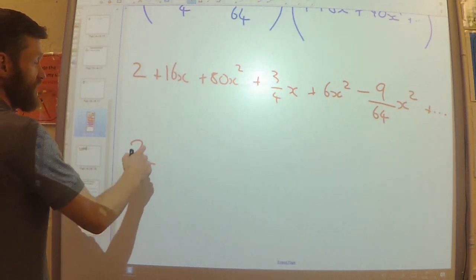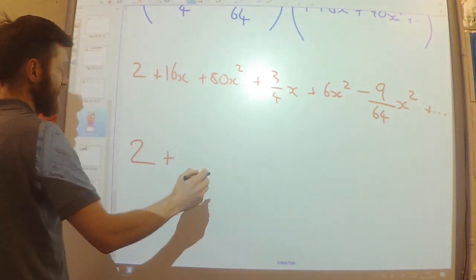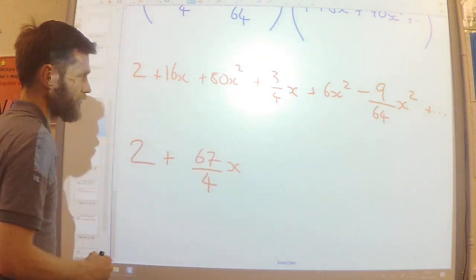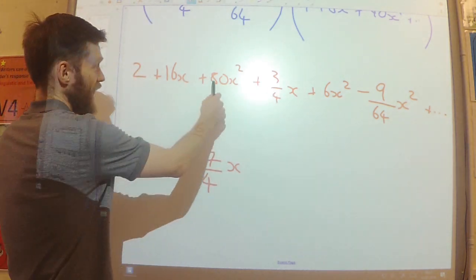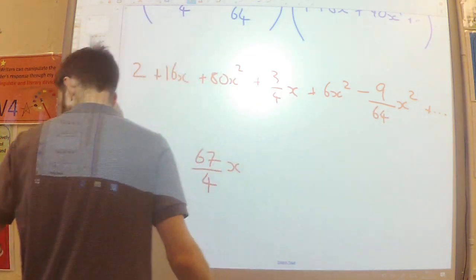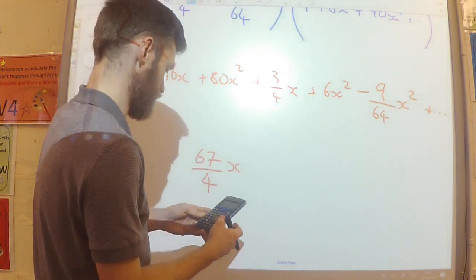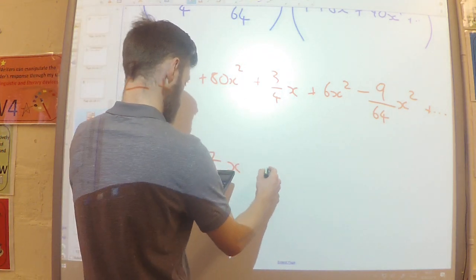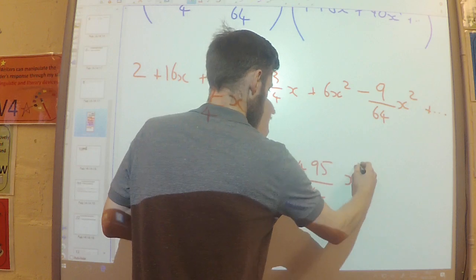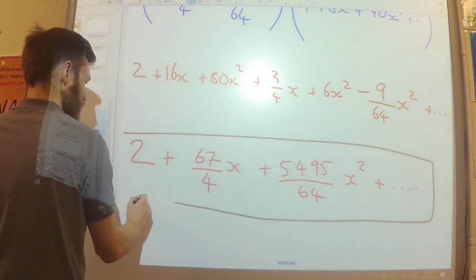And now let's just collect the like terms. So I've got 2. I've got 16x plus 3 over 4x, which I think is 67 over 4. Put those two together. Then we've got 80x squared plus 6x squared minus 9 over 64x squared. So let me just do that with a calculator. And there we go. So here is my expansion. And I've got one other thing that I need to do.